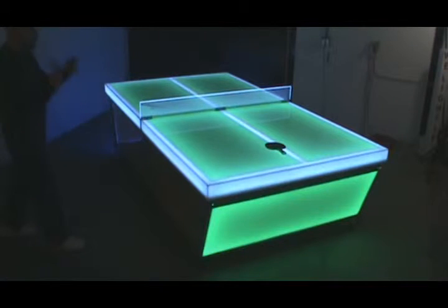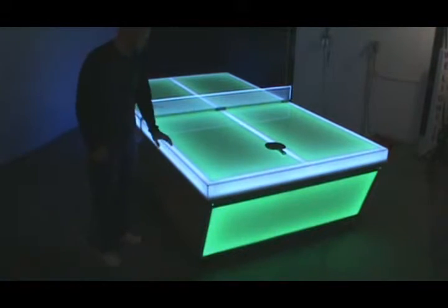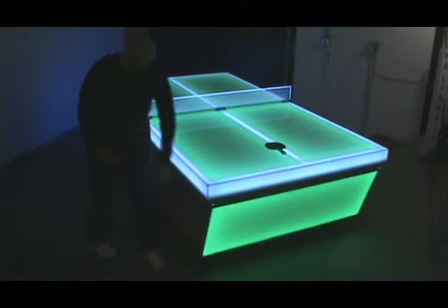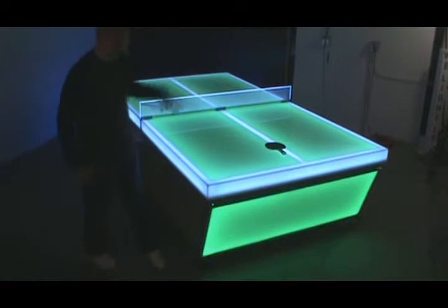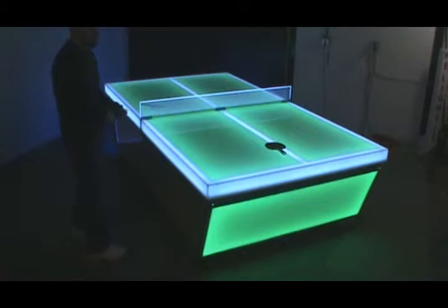When you want to go and change the colors, you've got two remote controls. One remote control will control your border and your net. The other remote will control your end panels and your four quadrants on the table. Right now I have it on the traditional green and white. With the touch of a button I can change it.